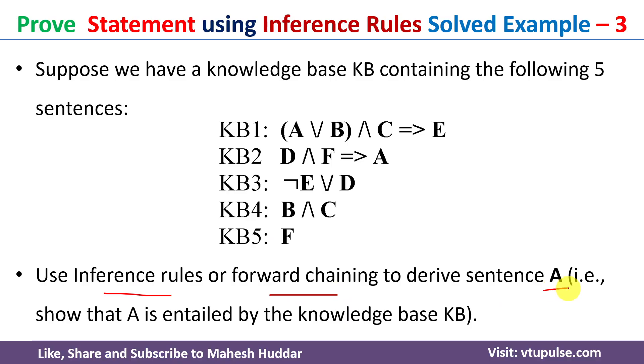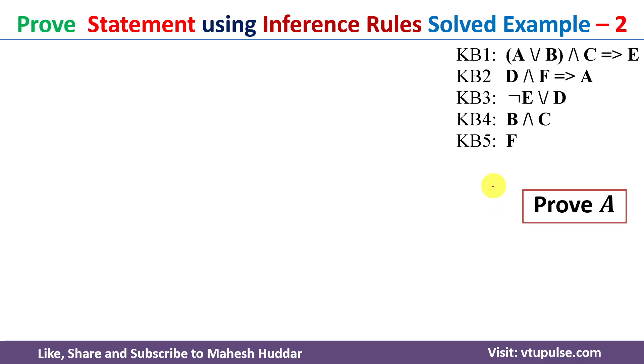Here, these are the five knowledge bases given to us. Given this, we need to prove A. Now, if we want to prove A, we can get this particular A from the second knowledge base. To get A out of it, we need to have D and F. To get D and F, F is available here, but D is not available in any of the knowledge bases separately.